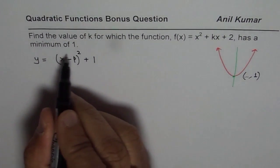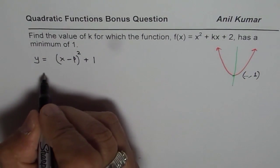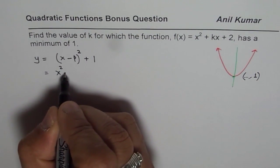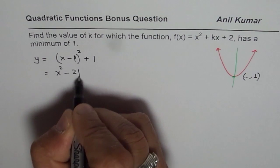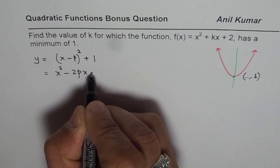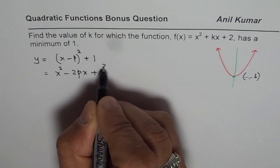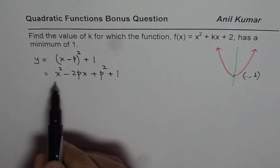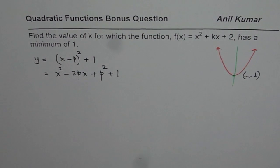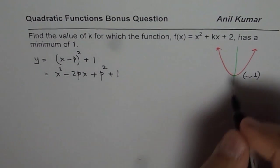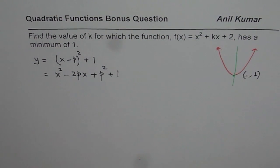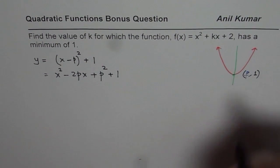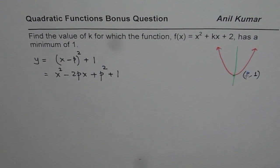Now, let us expand this equation. So if we expand this equation, we get x squared minus 2px plus p squared plus 1. So this is what we get as our new equation, where we are saying this value here is p for us. So we don't know what this value is, but it is p for us. We don't know what this p is.